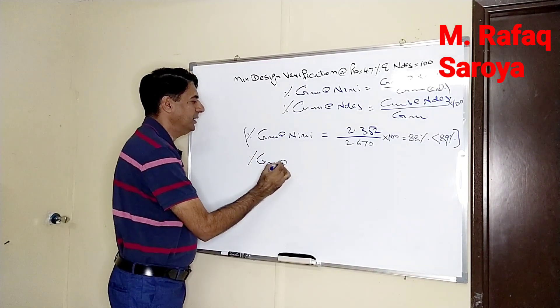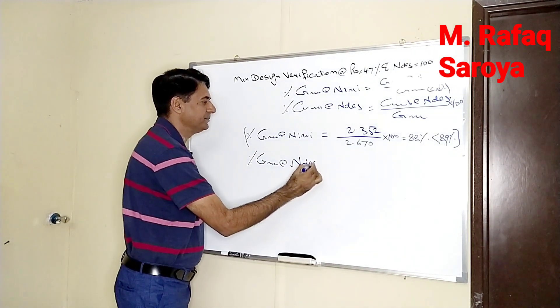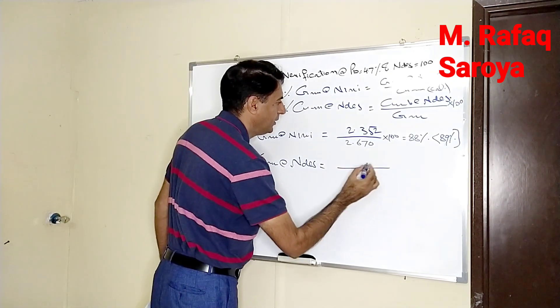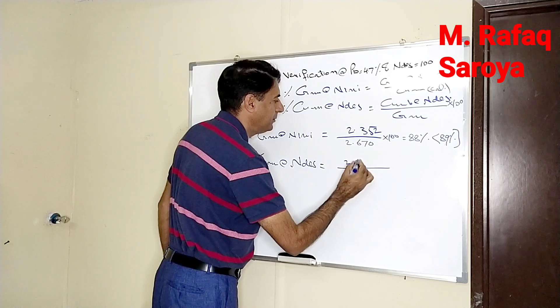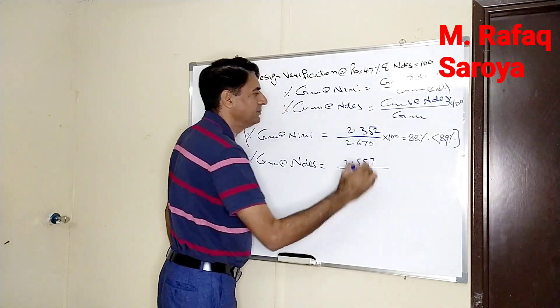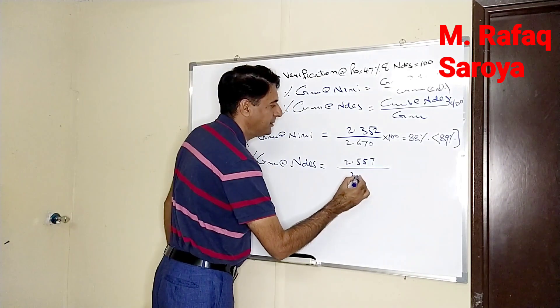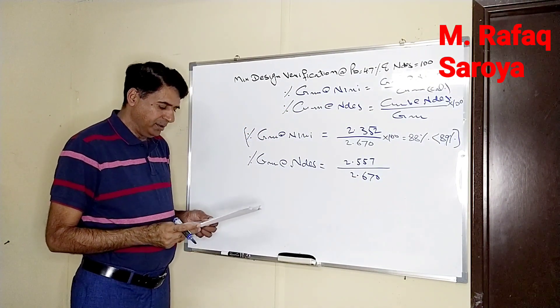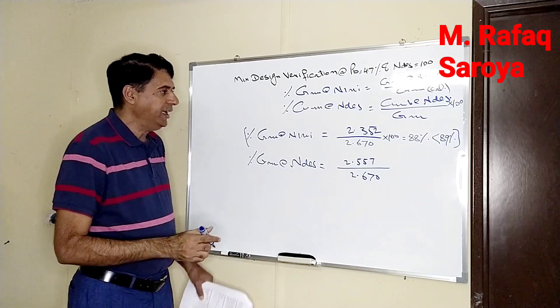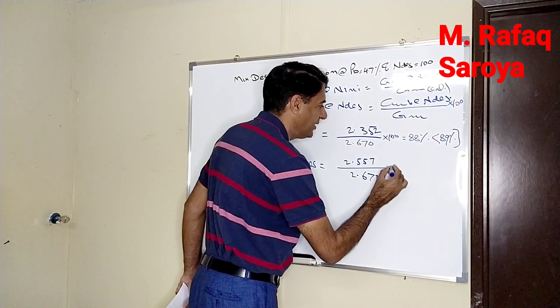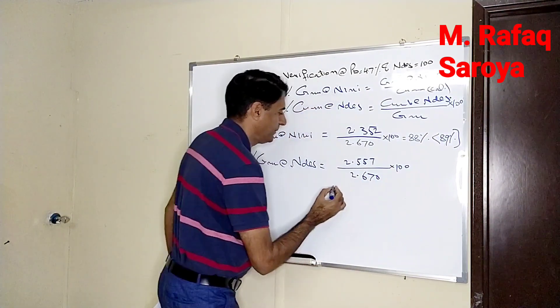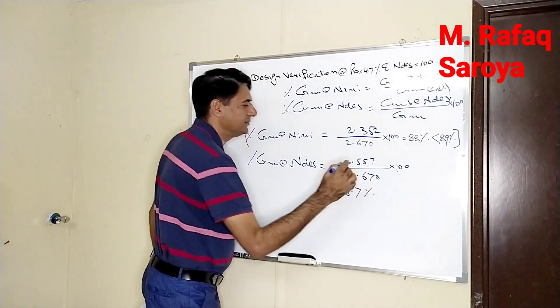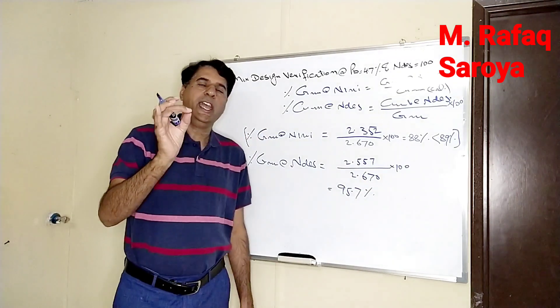Percentage GMM at the rate of n dash. Now over here, 2.557, 2.670, these are the values. When I divide this value, I am going to get its answer 95.7%.